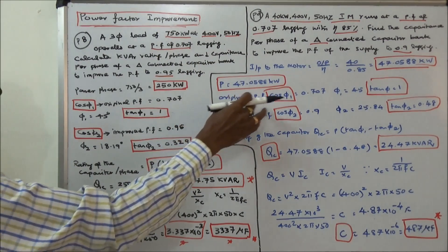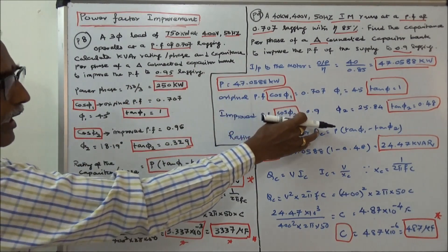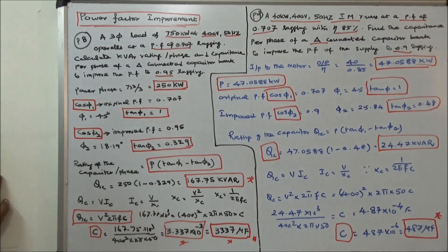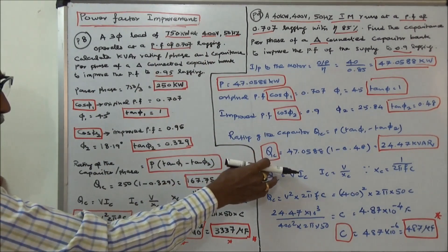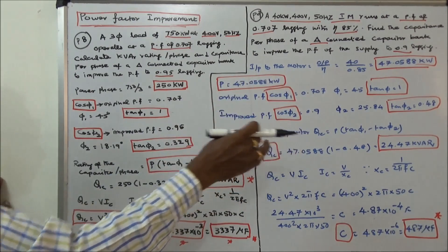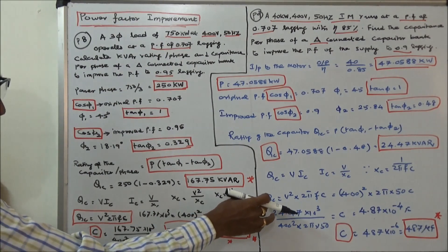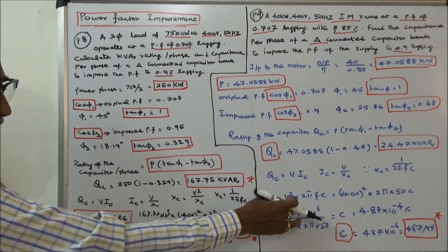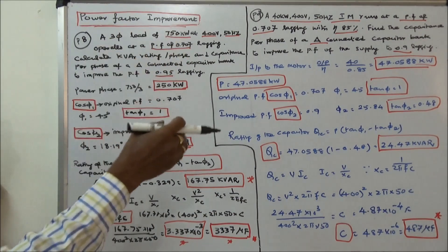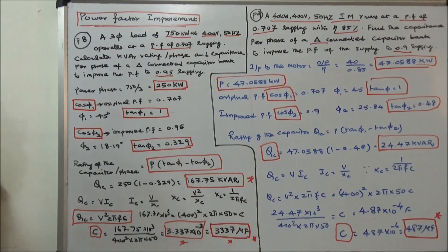Original power factor cos φ1 is equal to 0.707, tan φ1 is equal to 1. Improved power factor is 0.9, tan φ2 is equal to 0.8. Rating of the capacitor QC is equal to P into (tan φ1 minus tan φ2), that is equal to 24.47 kVAR — that is the rating of the capacitor. Using QC equal to V squared into 2π F C, with F equal to 50 Hz, we calculate C equal to 487 microfarads.